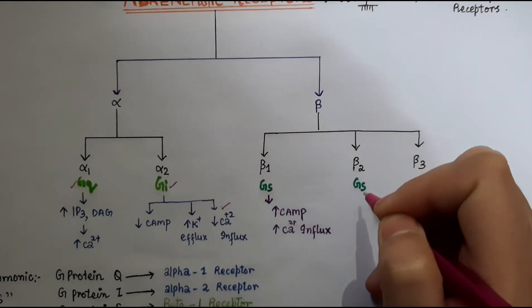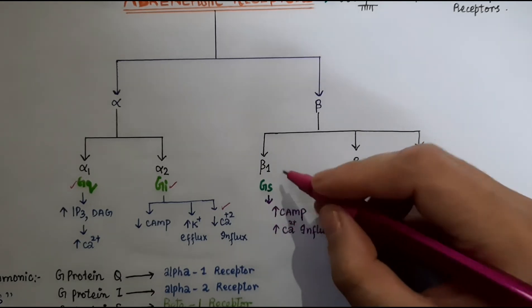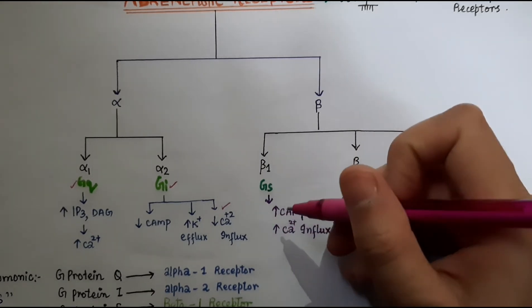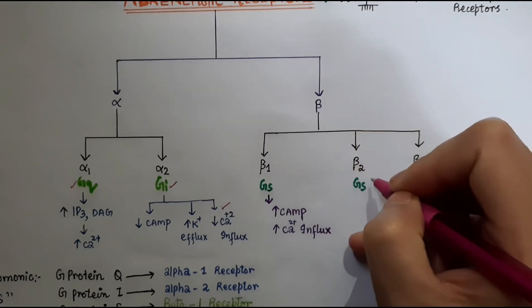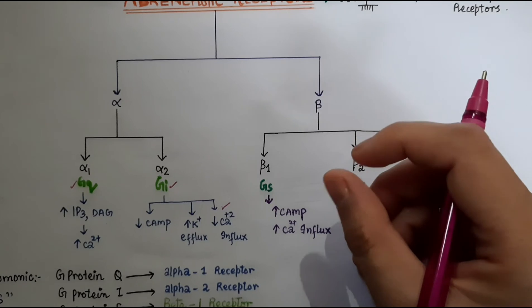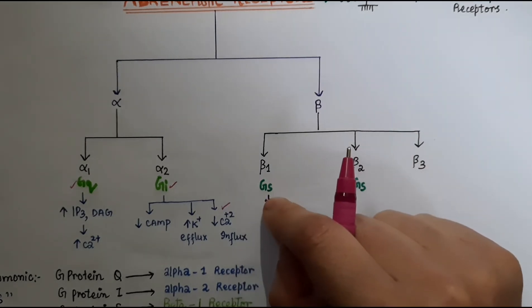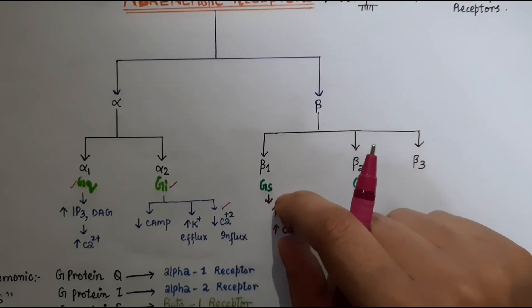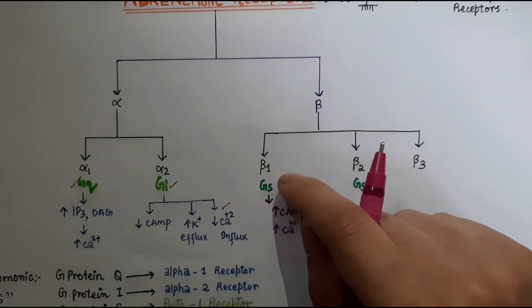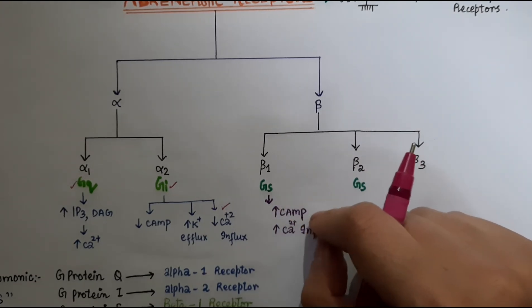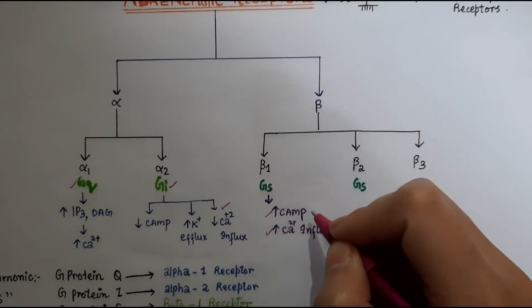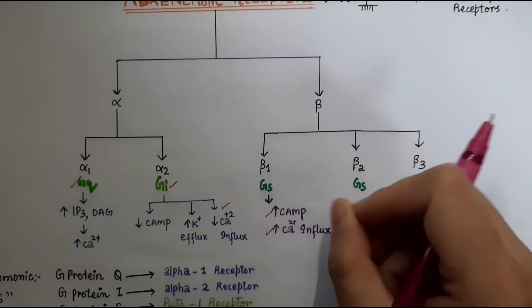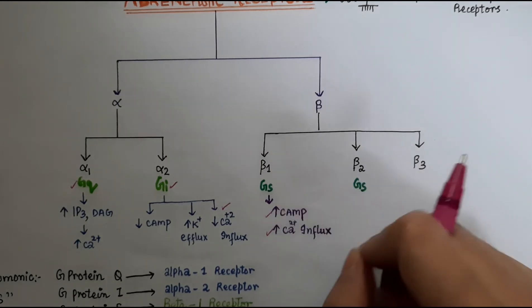Beta-2 is also G-stimulatory. When we talk about adrenaline and noradrenaline with beta-1 or beta-2 receptors, these are linked to the Gs, G-stimulatory form of G-protein.